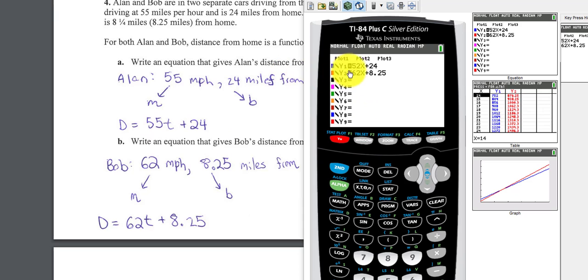The problem was 55x, and I entered 52x. That's a problem. All right, now I fixed it. 55x plus 24. I had 52. Sorry about that. I press Graph.